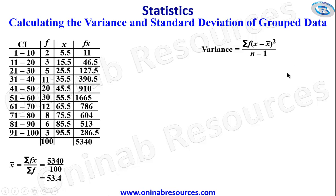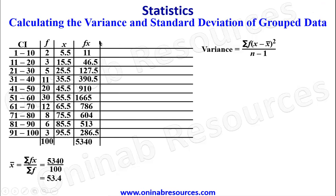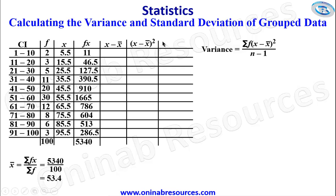So that is the x-bar. The next thing now is to create a column for x minus x-bar, thereafter we square it before we multiply by the frequency. We have the next column: x minus x-bar, then x minus x-bar all squared. The last column is f times x minus x-bar squared. So x minus x-bar uses this x, which is the mid value, minus 53.4.